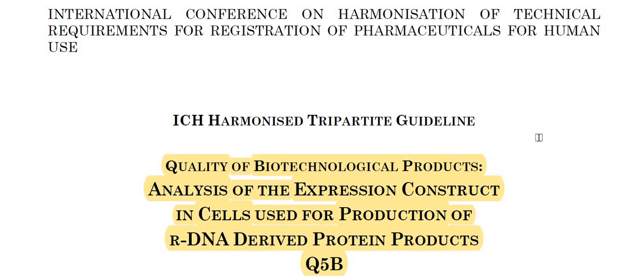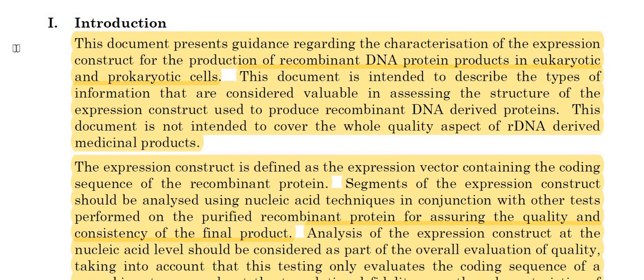So friends, how are you? Hopefully, we all are doing well. ICH's knowledge has come — we have a new guideline. ICH Harmonised Tripartite Guidelines: Quality of Biotechnological Products — Analysis of Expression Construct in cells used for production of rDNA-derived protein products. Q5B. First, let's begin with the introduction to the guideline.